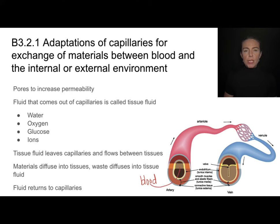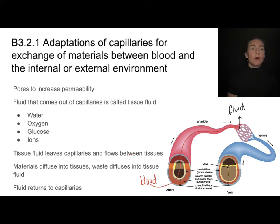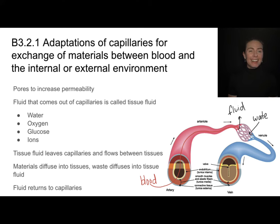Blood flows through arteries, then arterioles, and when it reaches the capillaries, fluid comes out containing oxygen, water, glucose, and other things the tissues need. That tissue fluid flows between tissues, and materials diffuse into the cells as needed. Tissues also produce waste that needs to diffuse back into the capillaries, becoming part of the blood in that capillary network. That blood then flows through venules, into veins, and back to the heart.